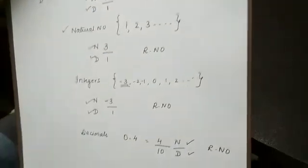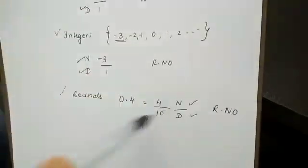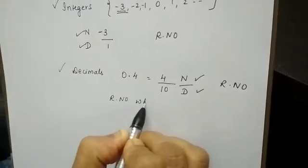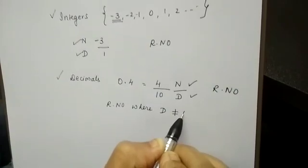So we can conclude that whole numbers, natural numbers, integers, and decimals are all rational numbers where the denominator is not equal to 0.